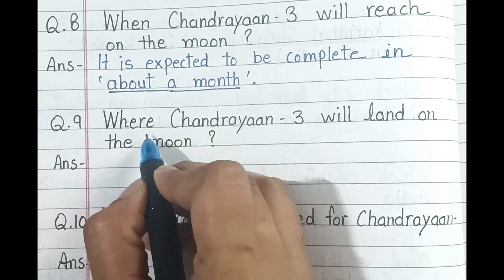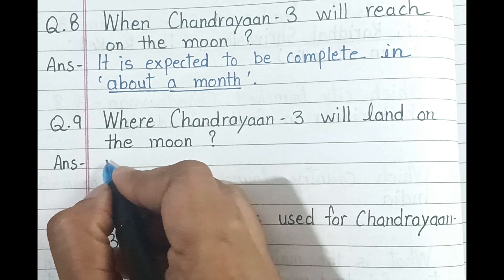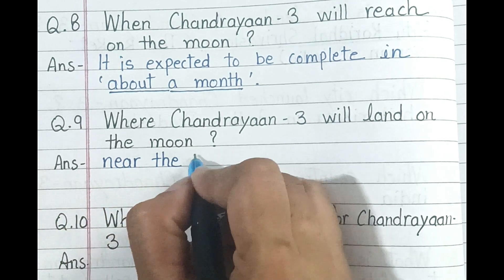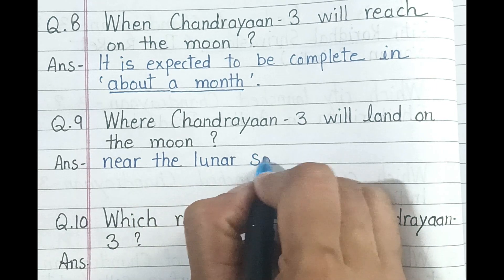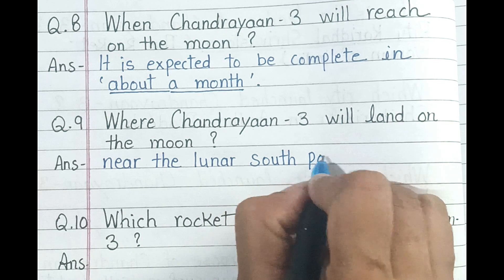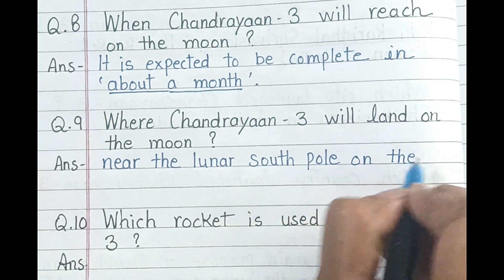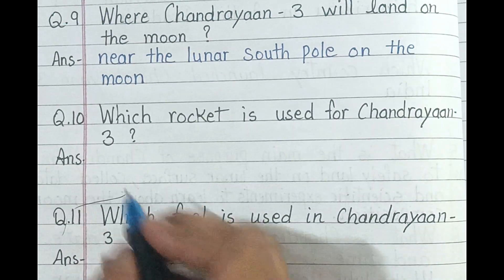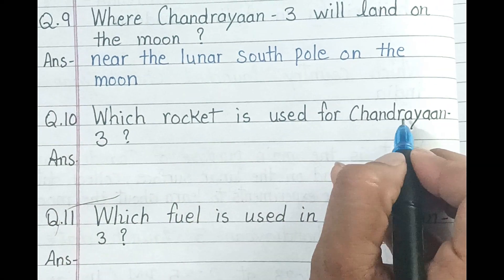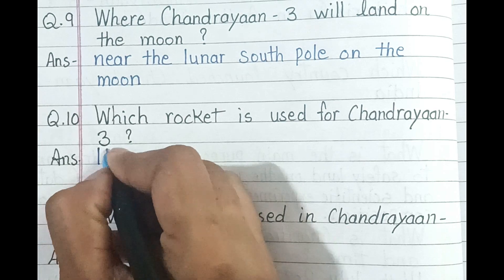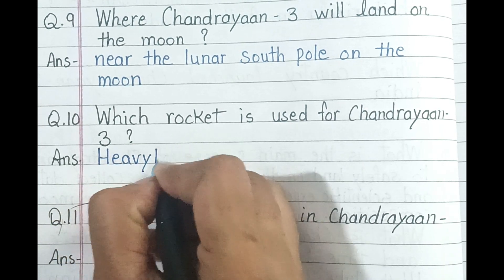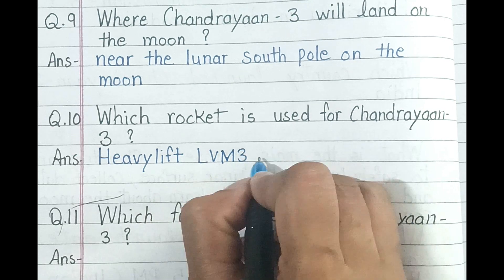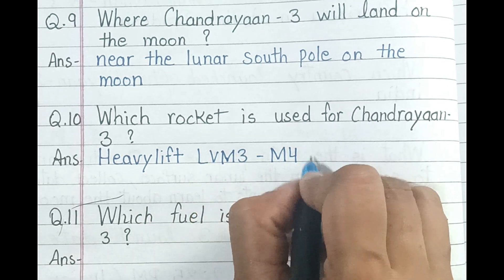Question number 9. Where will Chandrayaan 3 land on the moon? And the answer is near the lunar south pole on the moon. Question number 10. Which rocket is used for Chandrayaan 3? And the answer is the Heavy Lift LVM3-M4 rocket.